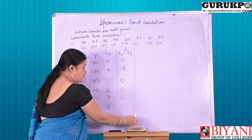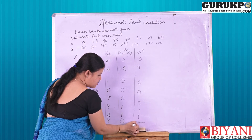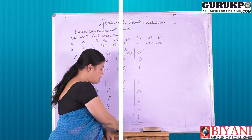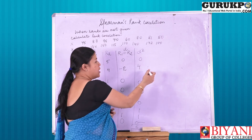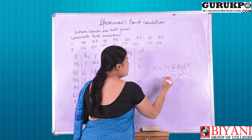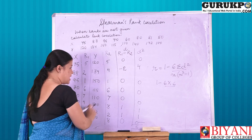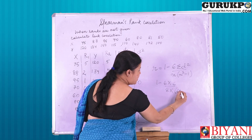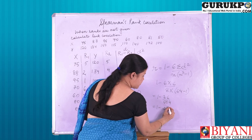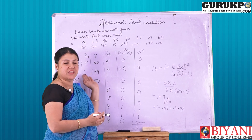The next step is we have to square the D values. So: 0, 4, 0, 0, 0, 1, 1, 0 — and the total sigma D squared comes to 6. Now the formula is: r = 1 minus 6 times sigma D squared divided by n(n squared minus 1). So: 1 minus 6 into 6, where n is 8, giving 8 times 64 minus 1, that is 1 minus 36 upon 504, which comes to 1 minus 0.07, that is 0.93. So there is a perfect positive correlation between the marks given by judge X and judge Y.